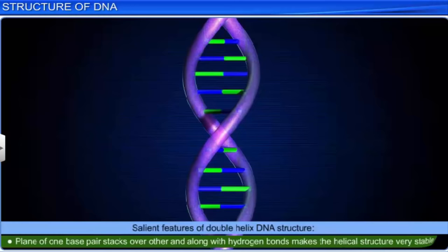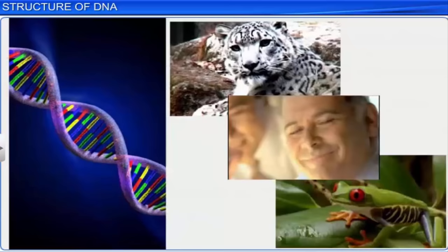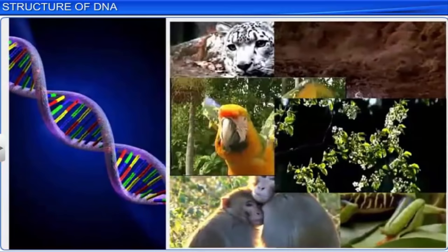Additionally, in a DNA double helix, the plane of one base pair stacks over the other, which along with the hydrogen bonds makes the helical structure very stable. The stable DNA helix structure allows it to be the genetic material that has instructions for the development and functioning of all known living organisms.